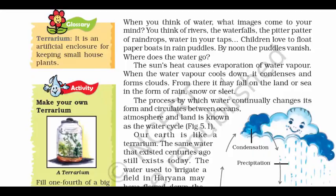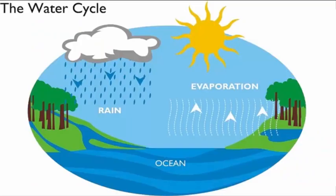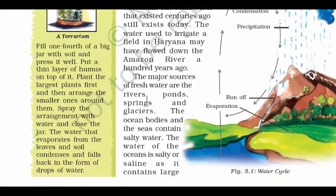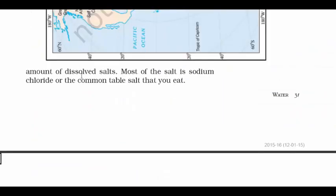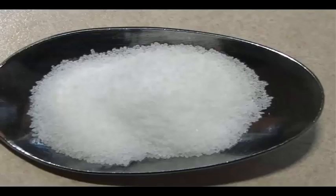In the first page, we will read about evaporation. It is a process by which water is converted into water vapor with the sun's heat, and when the water vapor cools down, it forms clouds and later may fall on the land or sea in the form of rain. From an examination point of view, it is important to remember that the major sources of fresh water are rivers, ponds, springs and glaciers. The ocean bodies and the seas contain salty water — the water of the ocean is salty or saline as it contains a large amount of dissolved salts. Most of the salt is sodium chloride, or the common table salt that you eat.